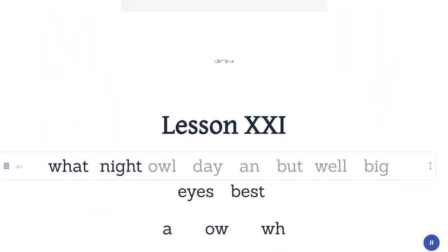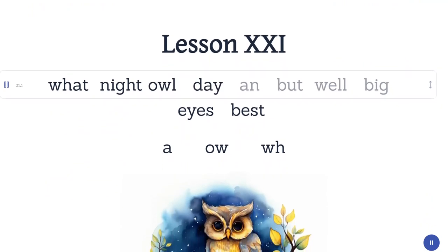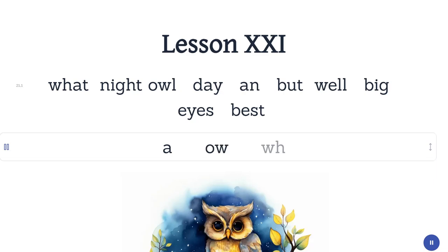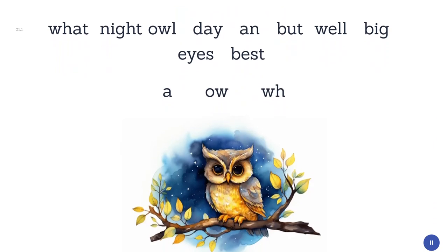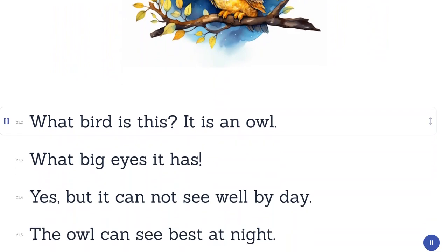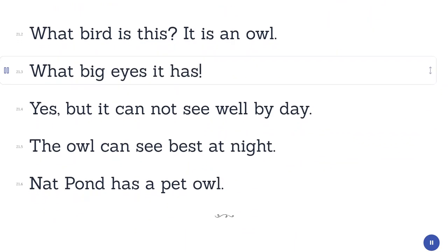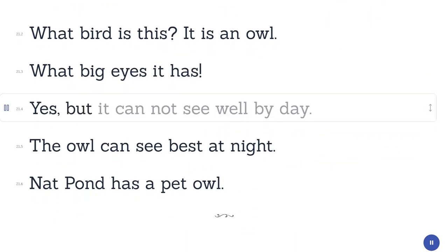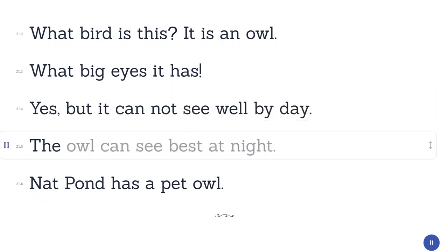Lesson 21. What. Night. Owl. Day. Ann. But. Well. Big. Eyes. Best. What bird is this? It is an owl. What big eyes it has. Yes, but it cannot see well by day. The owl can see best at night.